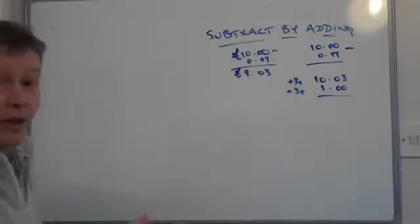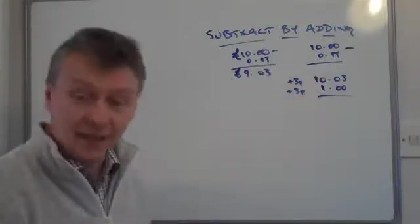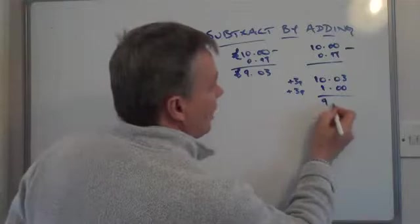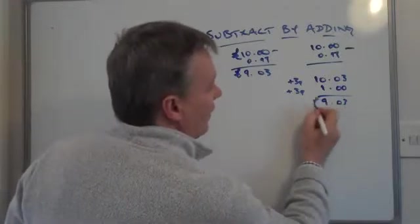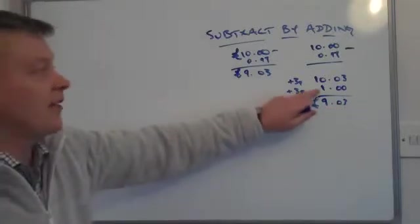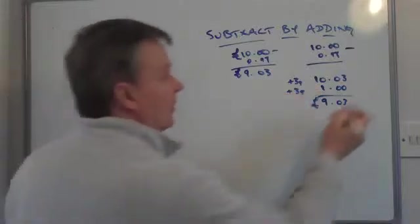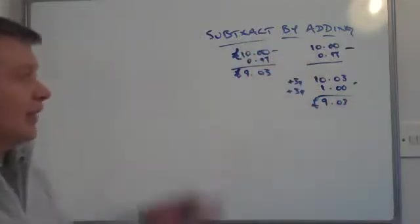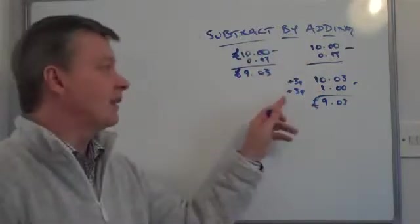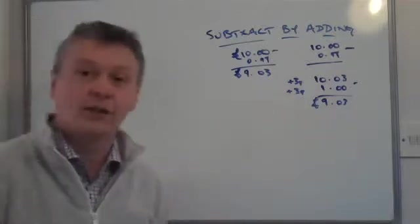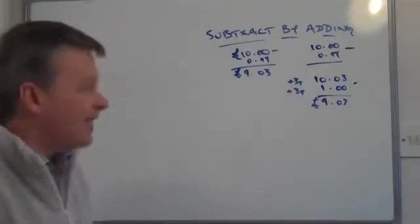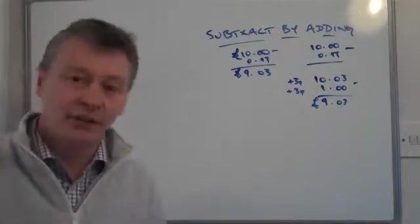Okay, if I take one away from the other, £10 and 3p take away £1 is £9 and 3p. So it's just much easier to take that £1 away if I wanted to. And it's a nice, simple, easy way of just adding a number on to make your calculation a little bit easier. And it kind of works for pretty much anything that you want really.